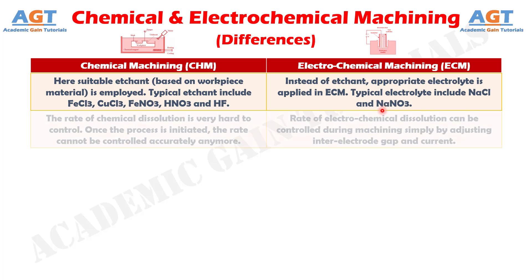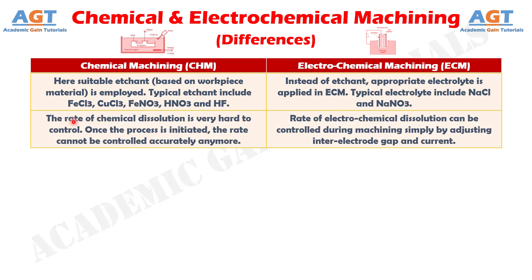Difference No. 7: In chemical machining, the rate of chemical dissolution is very hard to control. Once the process is initiated, the rate cannot be controlled accurately anymore, whereas in electrochemical machining, the rate of electrochemical dissolution can be controlled during machining simply by adjusting the inter-electrode gap and current.